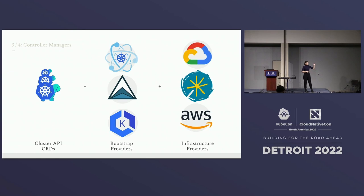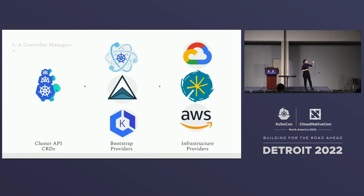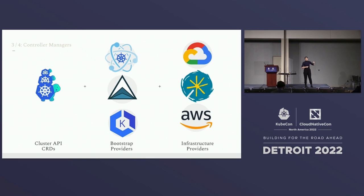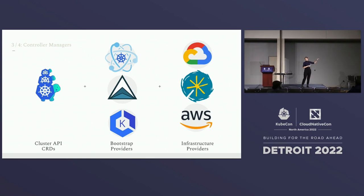If you'd like to provision clusters in multiple cloud providers, you will need a controller for each of them. So if you want to deploy to GCP, you'll need a GCP infrastructure provider. If you want to use Tinkerbell, you'll need that provider as well. The relationship is essentially one-to-many.